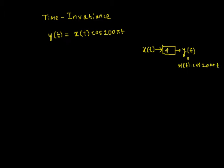That means whatever I feed in, it multiplies that input with cosine of 200πt and gets you the output. That is the nature of the system.